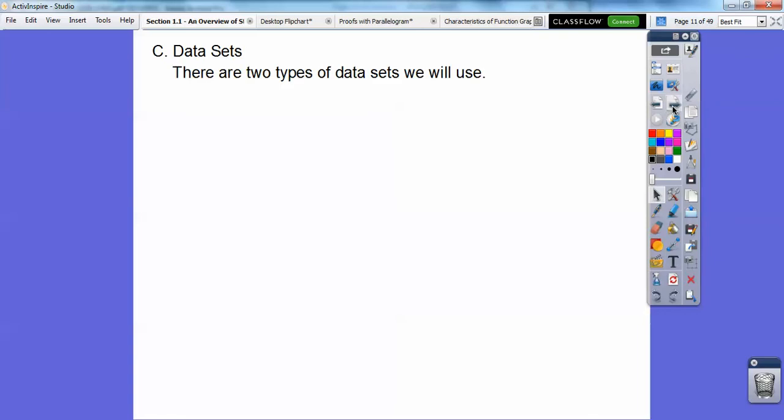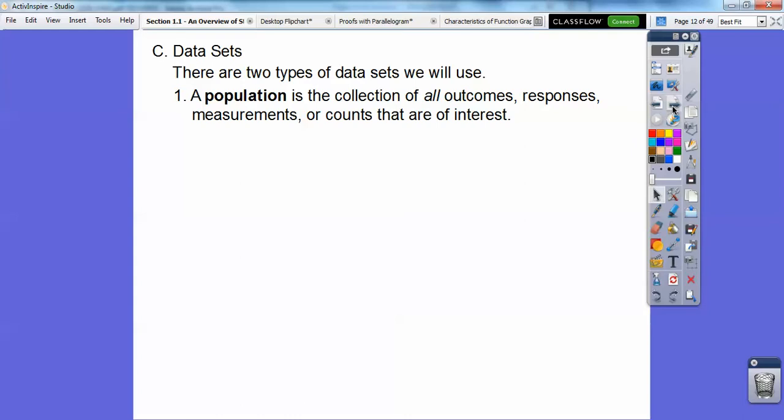Data sets. There's two types of data sets that we're going to be using in this textbook. The first one is a population. A population is the collection of all outcomes, responses, measurements, or counts that are of interest. Say you wanted to find the average GPA of the students at your high school, the population would be everybody at the school. Well, oftentimes to get everybody is hard and time-consuming and mistake-prone. So what we do is we do a sample instead. A sample is a subset or a part of the population.